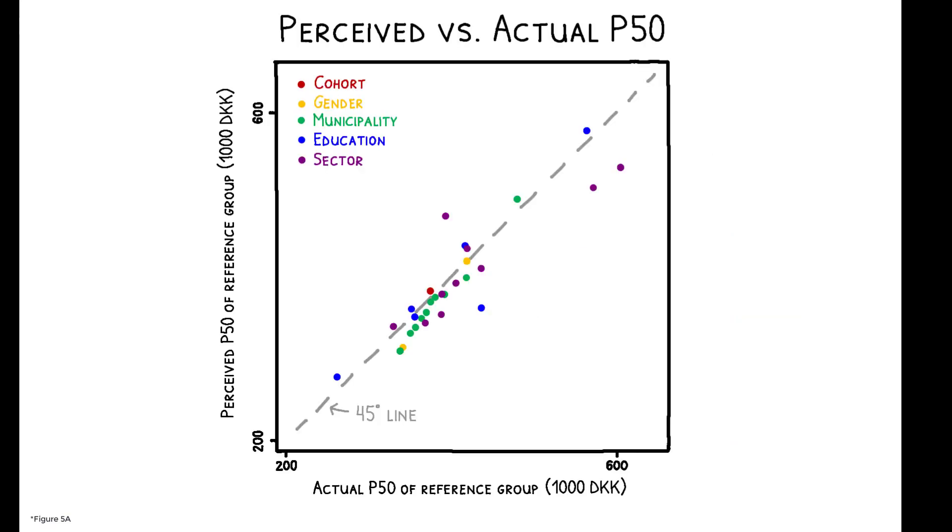To start, they find that on average, people have a fairly accurate perception of overall income levels. Perceptions of P50 are closely aligned to their actual levels, indicating that individuals are well aware of core income differences across different groups of people.